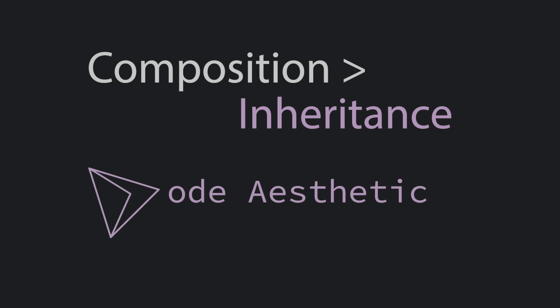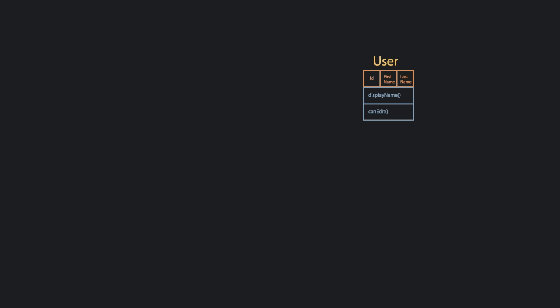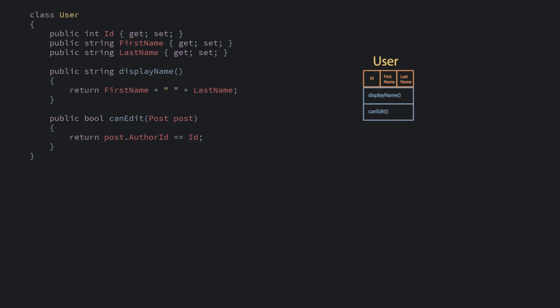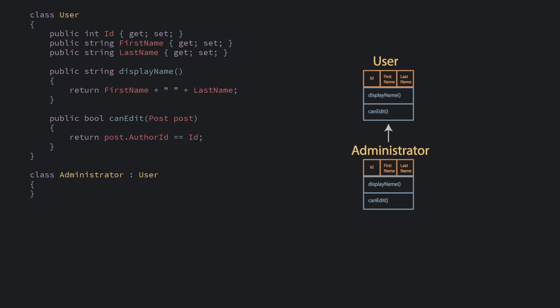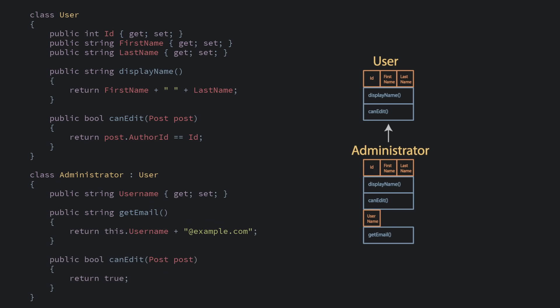Both composition and inheritance are trying to solve the same problem: you have a piece of code that you're trying to reuse. Inheritance is when you have a class that contains functionality you want to reuse, so you create a subclass extending its functionality. If you simply extend a class, you've basically created a copy of the class with a new name, and then you can inject new methods to extend or override parts.